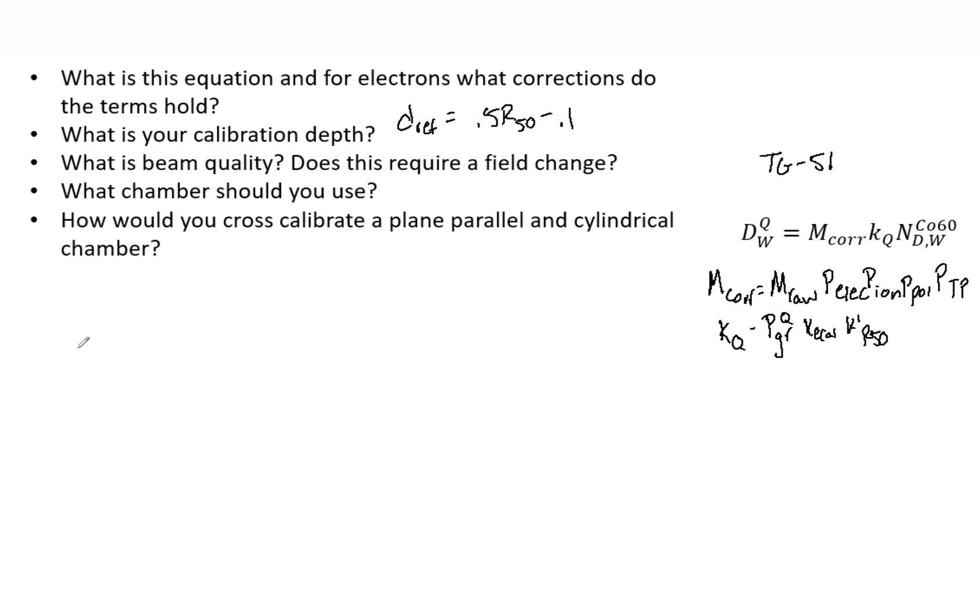What is beam quality and does it require a field change? Beam quality ultimately helps specify your beam, the energy, and how your beam interacts. R-50 is where the dose falls to 50% of the max value for 100 SSD in a 10 by 10 field size.